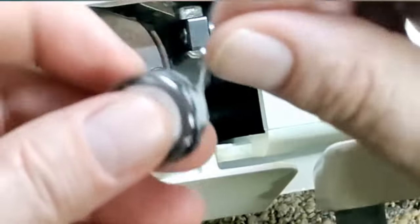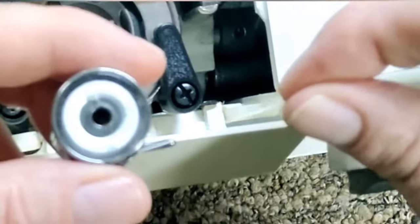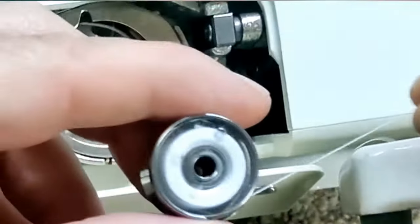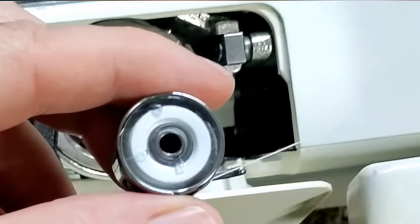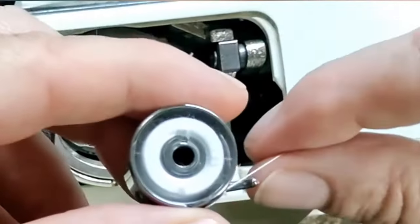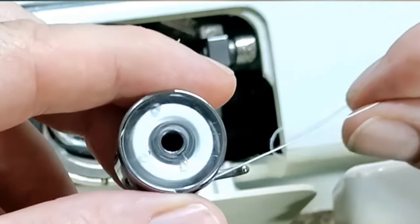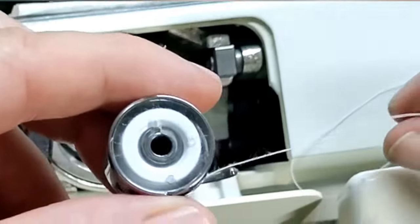If you put it in, clip it underneath and pull on this thread, the bobbin should rotate away from where you're pulling. You can see now it's chasing. I'm pulling to the right and it's turning toward where I'm pulling. That's the wrong way.